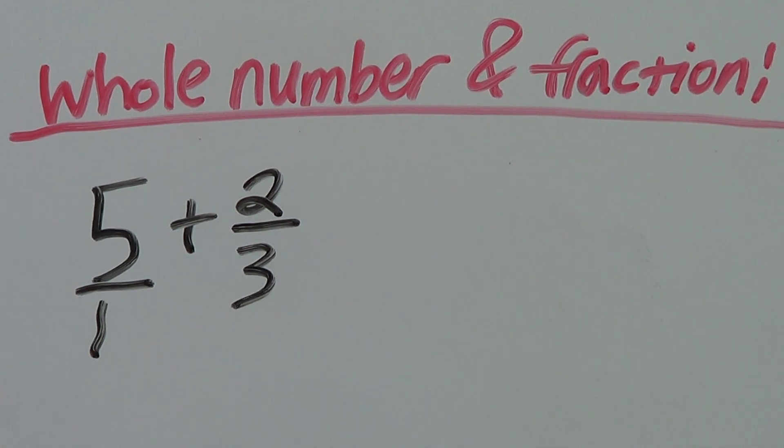5 over 1 and 5 are the same thing. If you just add that 1 on the bottom, you are now adding 2 fractions together. Next up, we have 2 uncommon denominators, so we have to get a common denominator. The least common denominator is 3.